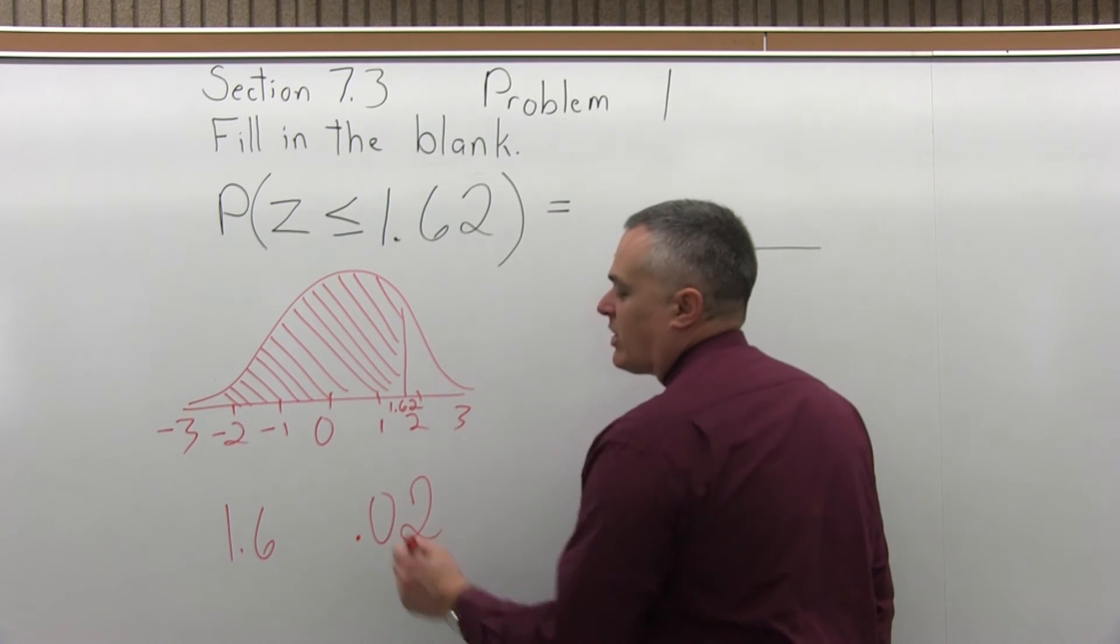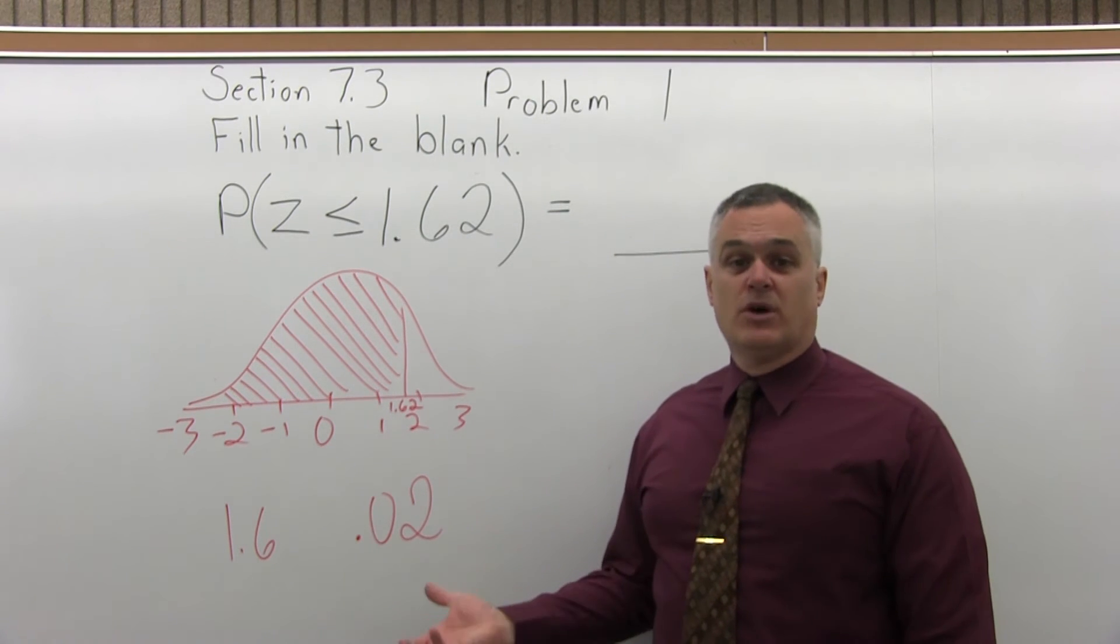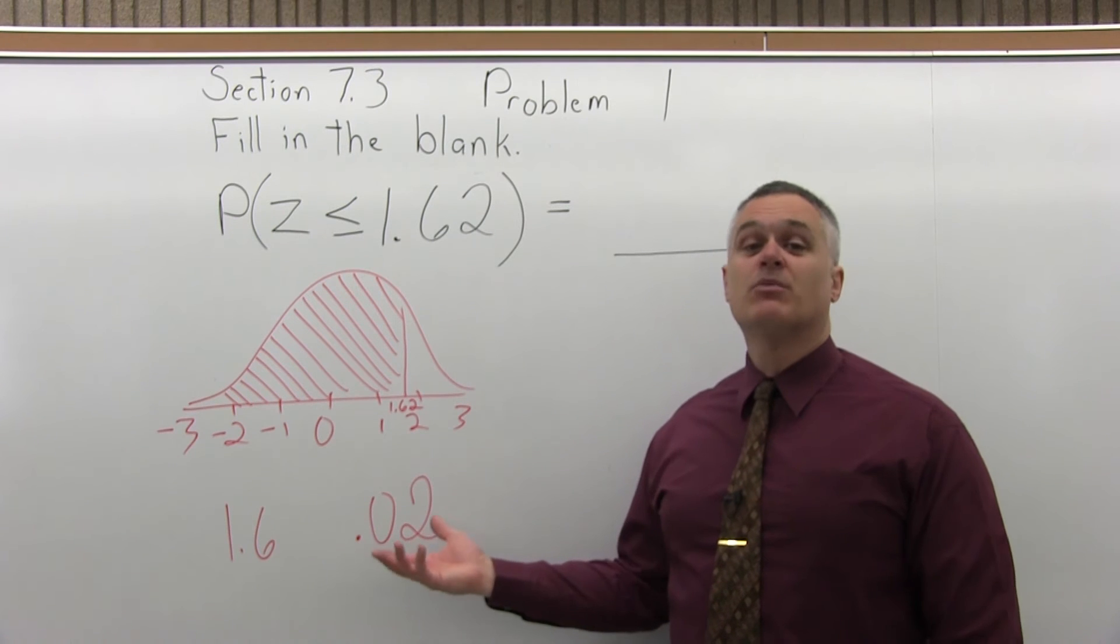Step 3, you put a 0.0 in front of the rightmost digit that you pulled off. So instead of 2, it's written as 0.02.